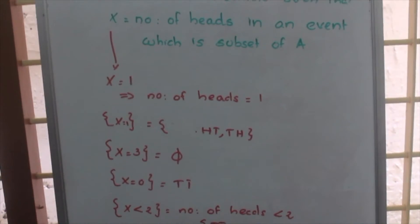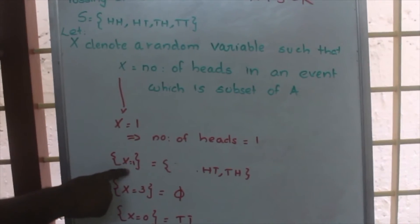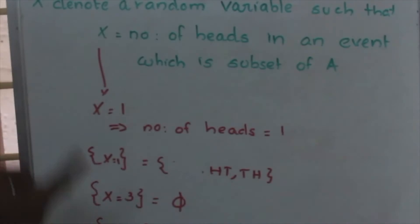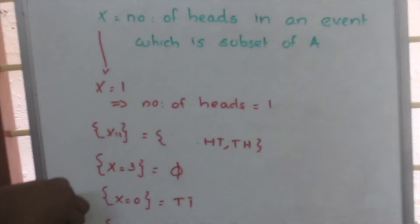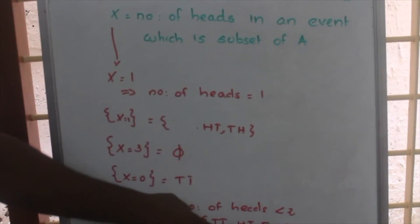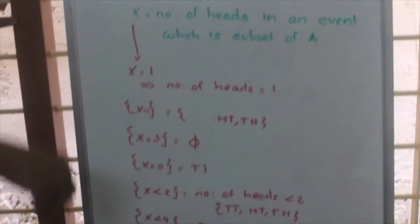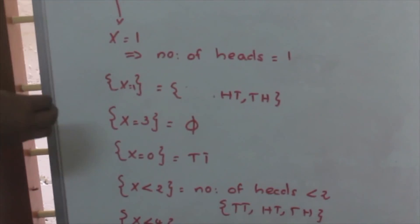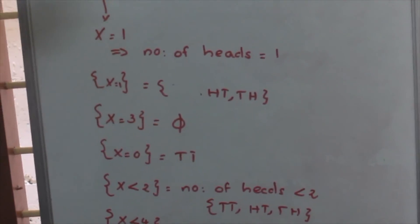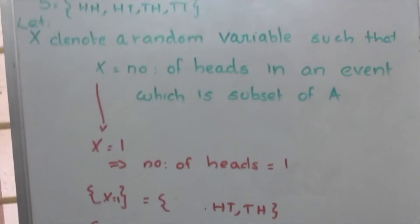By random variable here, why we are having this capital X as a random variable? Look, the capital X can take different values: 0, 1, 2, 3, 4, etc. As per the value of the random variable, we will get different outcomes. We will get different sets. So as X can take different values, we call it as a random variable. As we give different values to random variable, we will get different sets. So this is the meaning of a random variable.